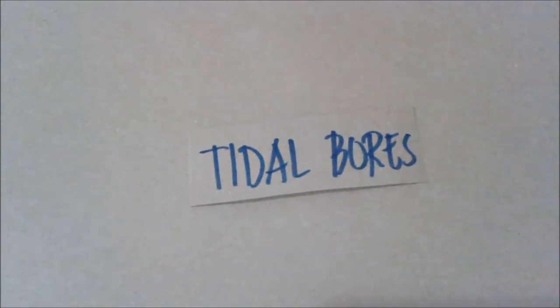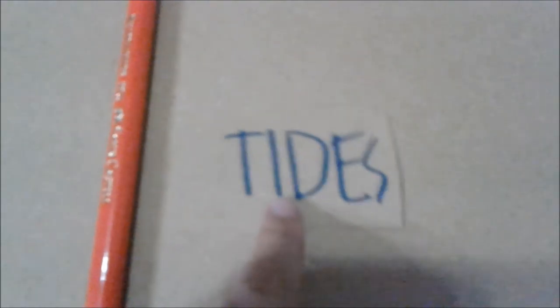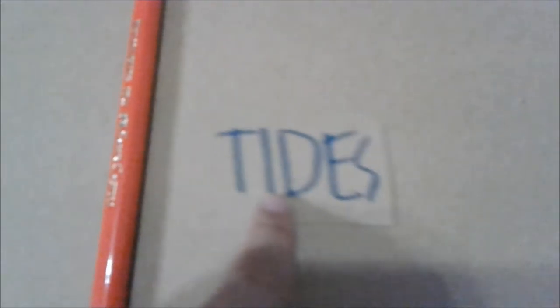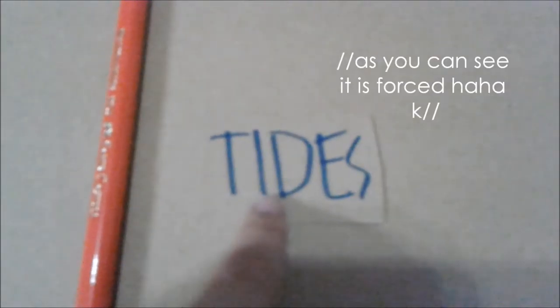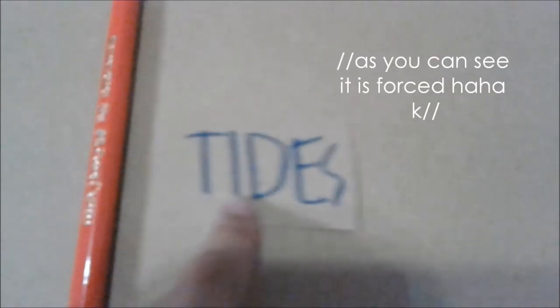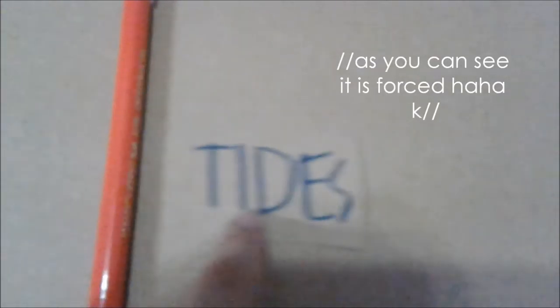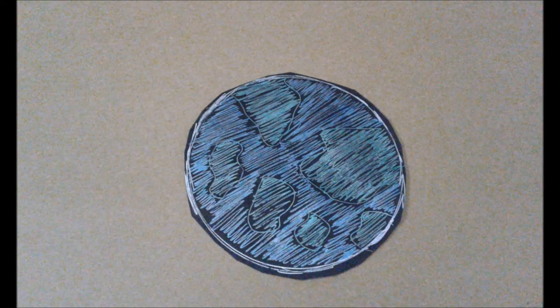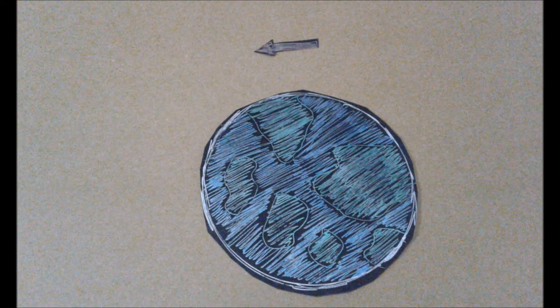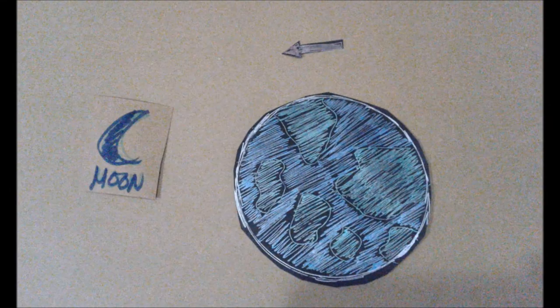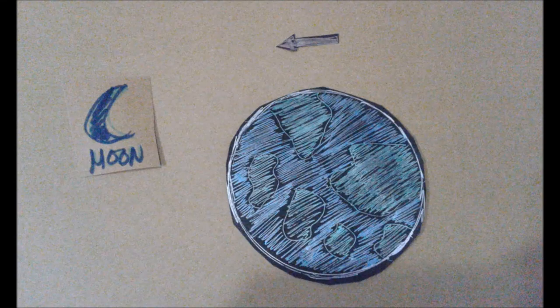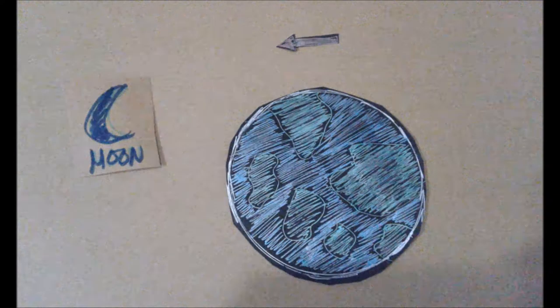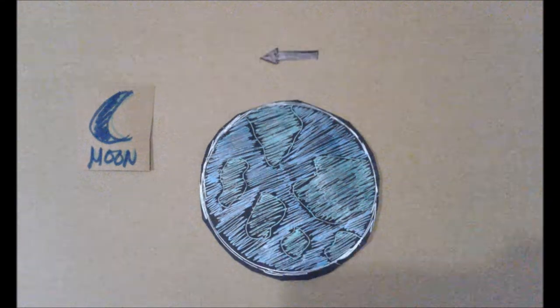Tidal bores can occur at the mouth of rivers, where the force of the incoming tides pushes waves of seawater upstream against the current. On the opposite side of the Earth, the lunar force is at its weakest and this causes another bulge to form.